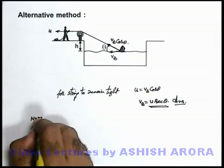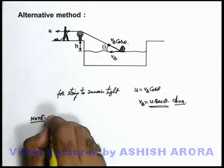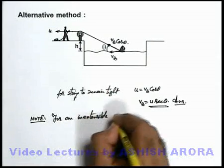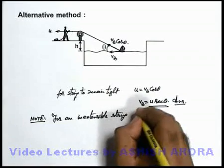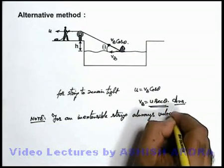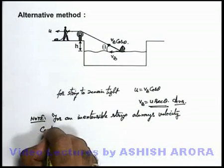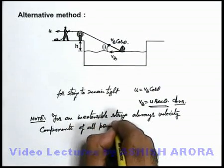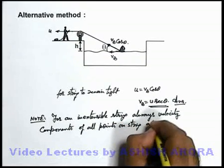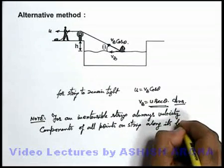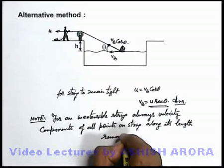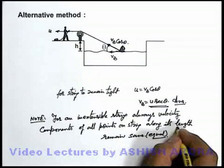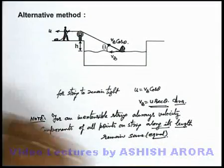Here we can also write down a note, just similar to what we studied in the previous example. For an inextensible rope or inextensible string, the velocity components of all points on the string along its length always remain the same or equal. All velocity components along the length of the string must remain equal. Be careful about this.